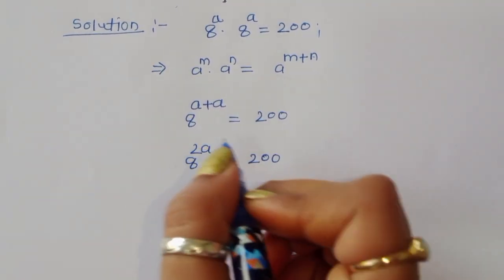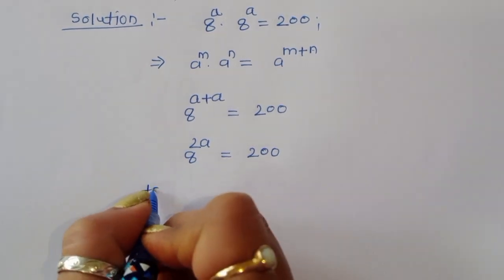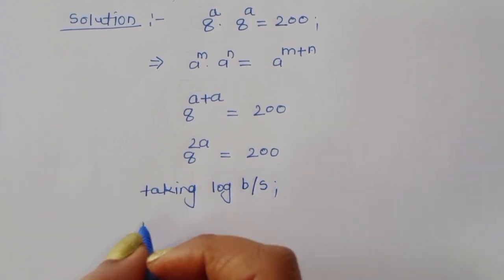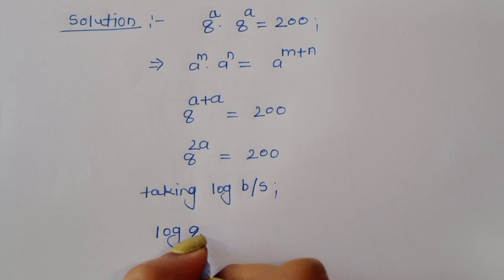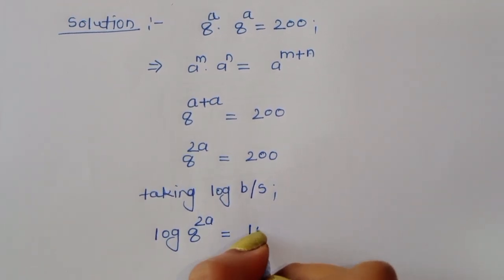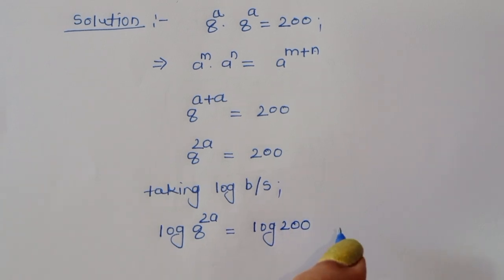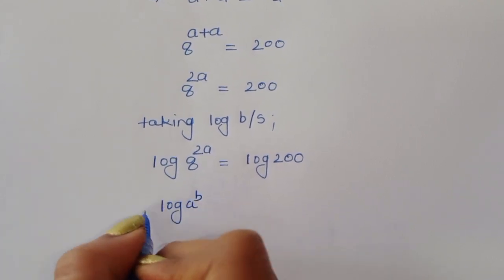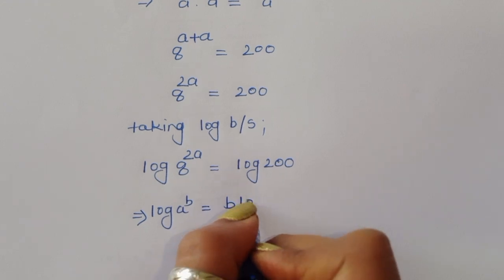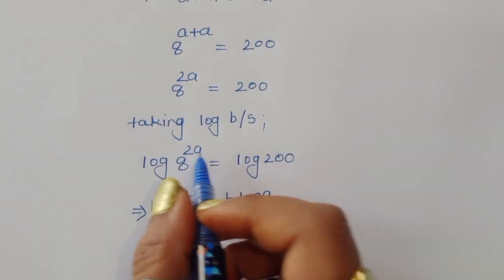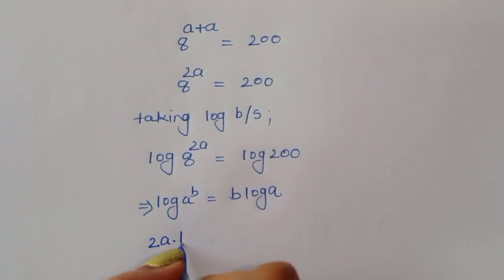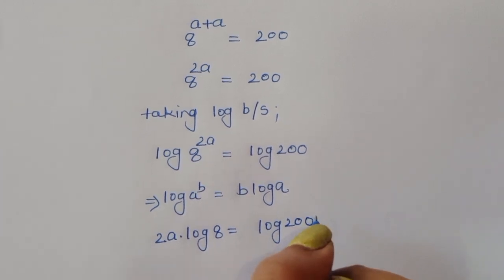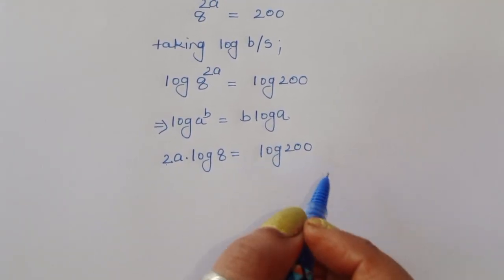To find the value of a, we take log on both sides. Then we get log of 8 power 2a equals log of 200. Using the formula log of a power b equals b times log of a, we can write 2a times log of 8 equals log of 200.